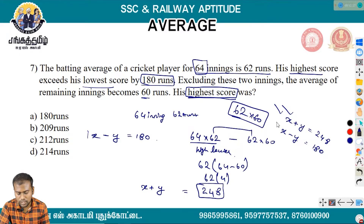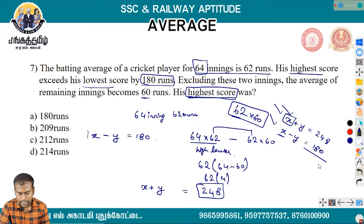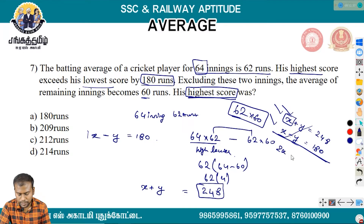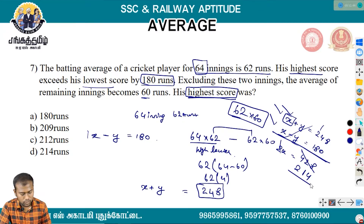The highest and lowest scores are x and y. The highest score exceeds the lowest by a given difference. If x plus y equals 428 and x minus y is known, then x equals 214. So the highest score is 214.